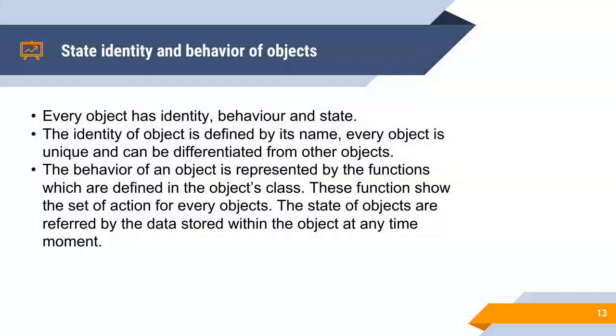State, identity and behavior of objects. Every object has its own identity, behavior and state by which it can be uniquely identified by other objects. The behavior of an object is represented by the functions which are defined in the object class. These functions show the set of actions for every object.